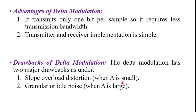Slope overload distortion occurs when the step size delta is small, while granular noise occurs when delta has a larger value.